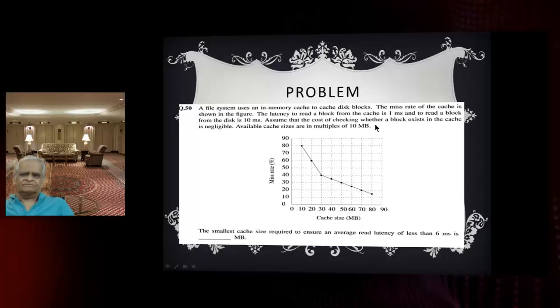Assume the cost of checking if the block exists in the cache is negligible. The available cache sizes are multiples of 10 MB: 10, 20, 30, 40, 50 and so on. What is the smallest cache size required to achieve an average read latency of less than 6 milliseconds?